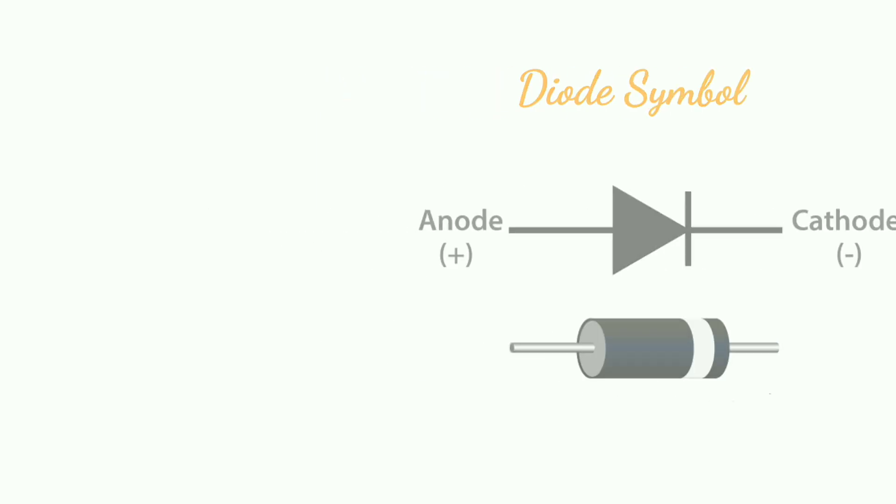Diode Symbol: Here are the symbols of the diode - anode positive and cathode negative.